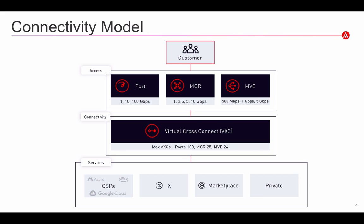The Megaport connectivity model is visually displayed here, and ultimately it's comprised of two components: access and connectivity. We have various forms of access listed here, but for today's session we'll focus on MVE. All of the Megaport components are deployed with just a few clicks in our web-based GUI, making it simple to design, deploy, monitor, and manage your Megaport solutions. Once MVE is deployed, users have full access to the various services across our global footprint, and they can connect to these services by deploying virtual cross-connects or VXCs.